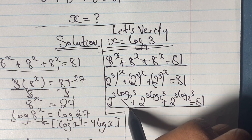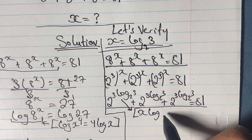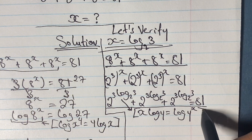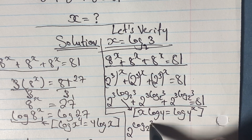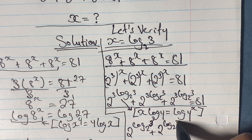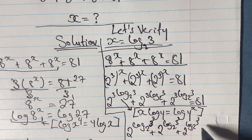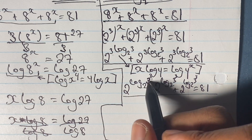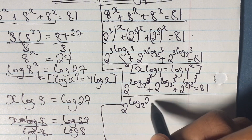Looking at what we have, we have 3 times log base 2 of 3 in the exponent. Using the rule x log y equals log y to the power of x, this becomes 2 to the power of log base 2 of 3, raised to the power of 3. We can rewrite this as 2 to the power of log base 2 of 27.